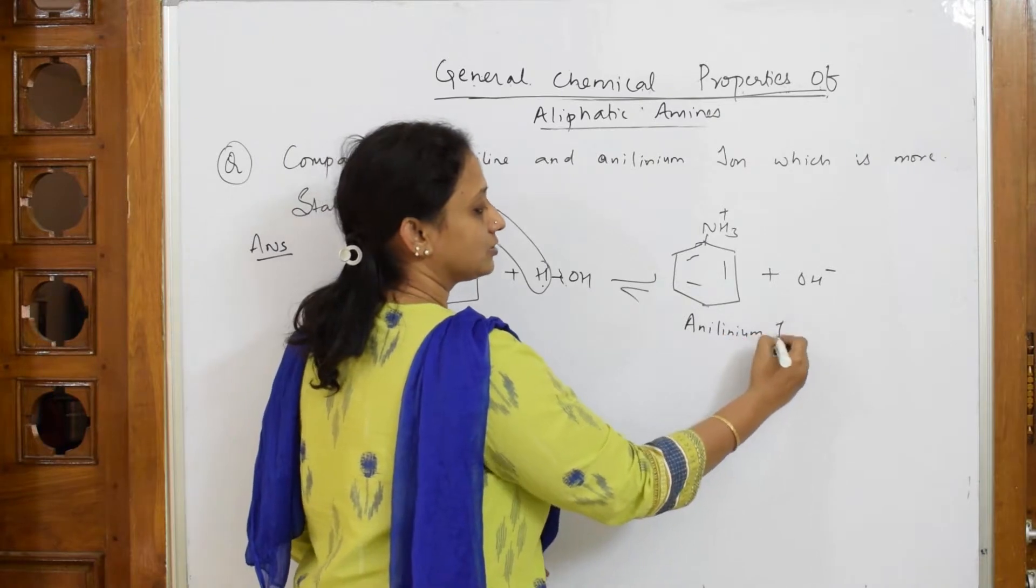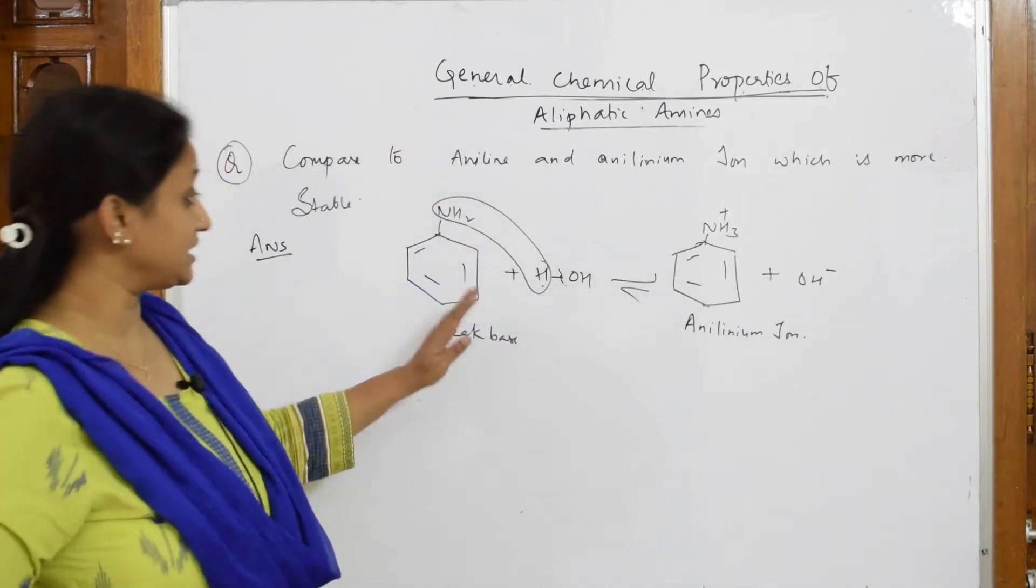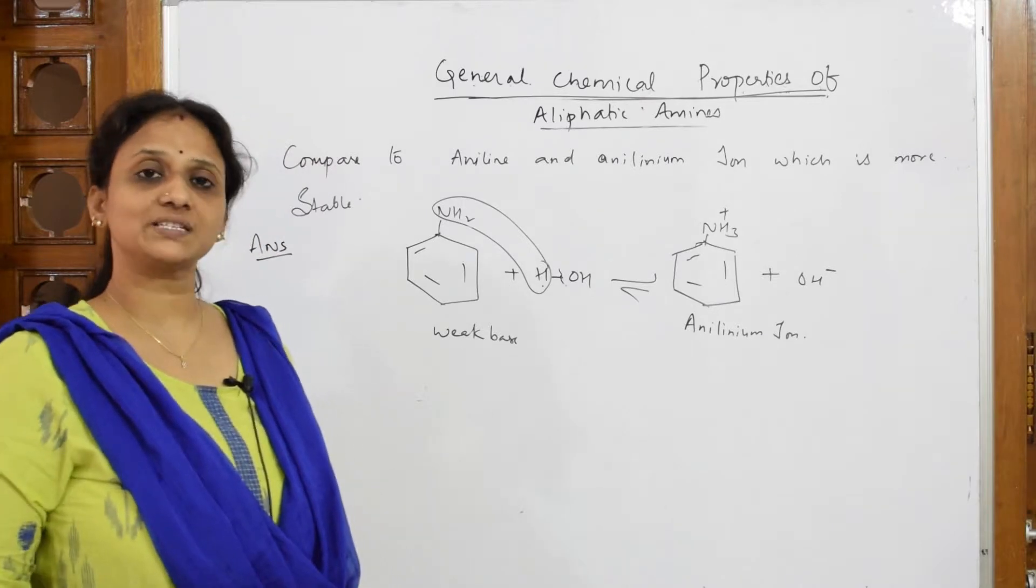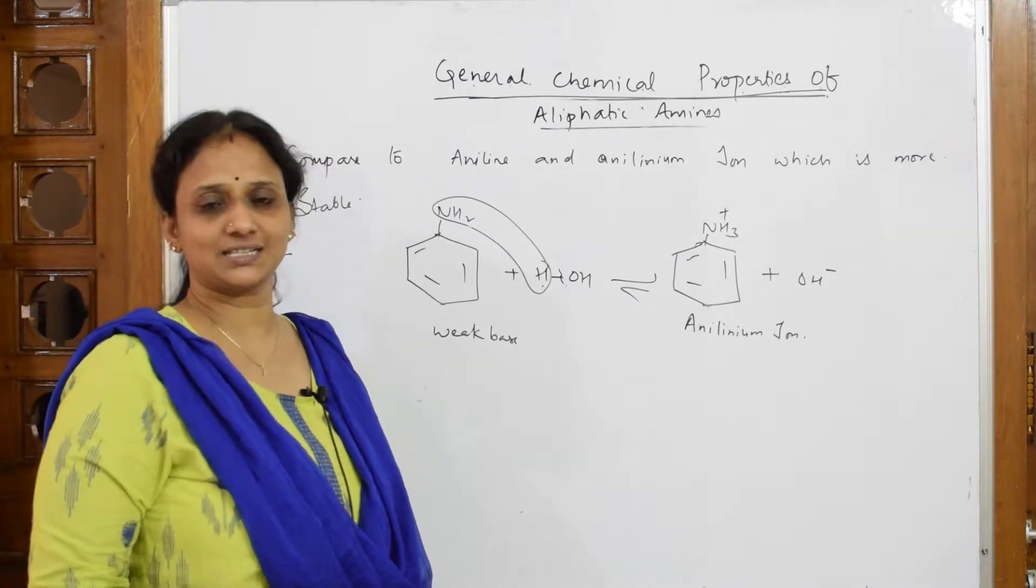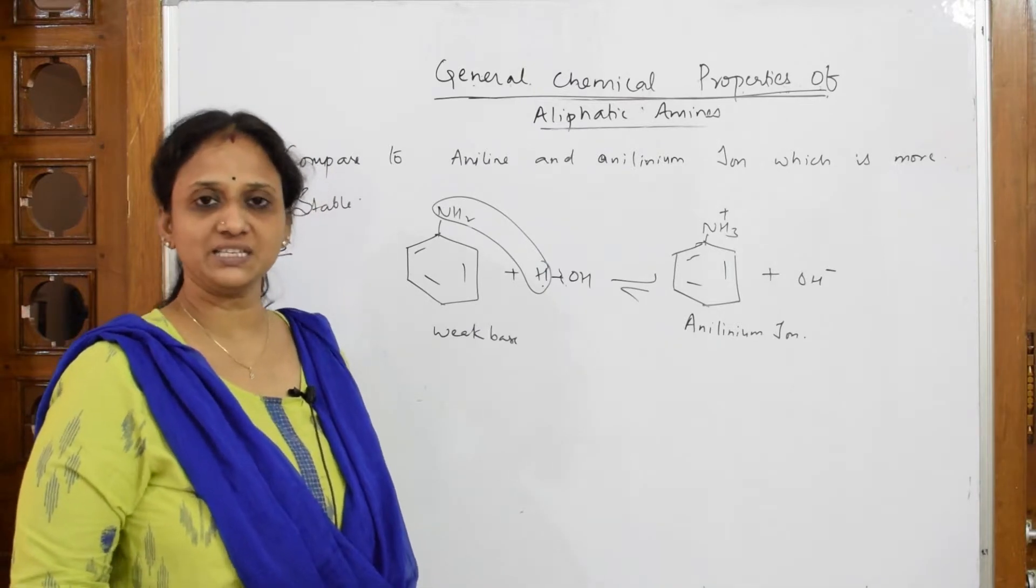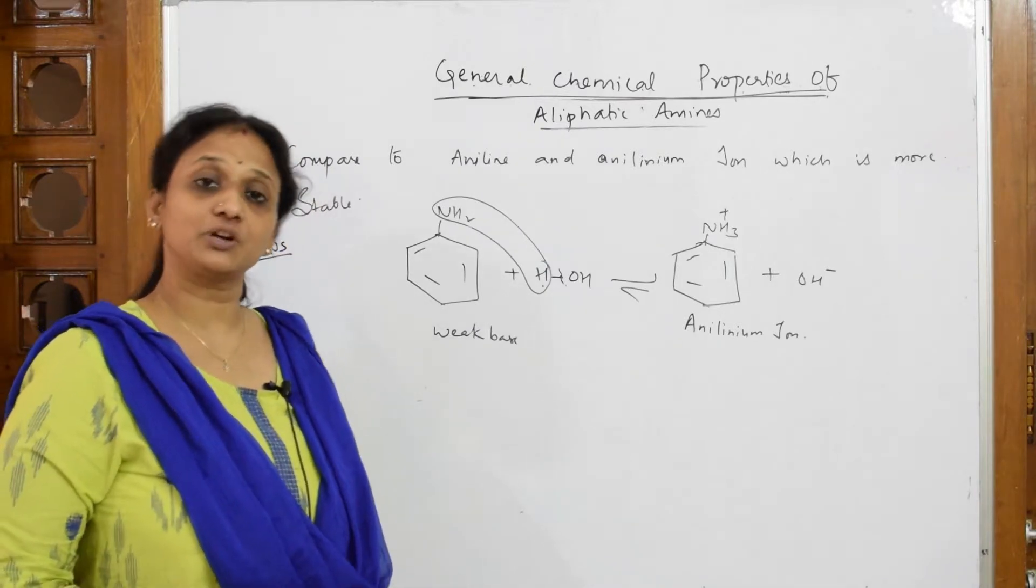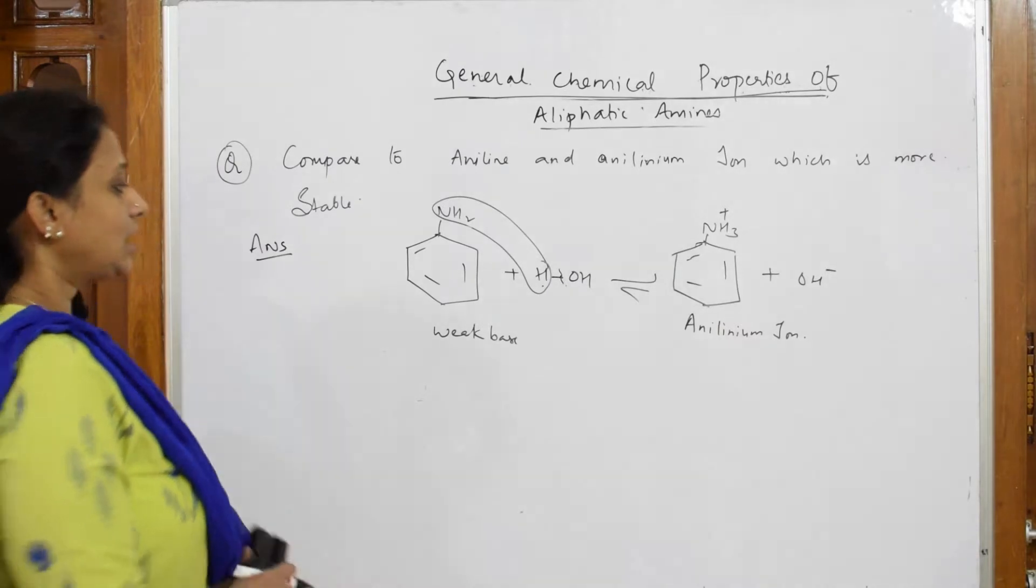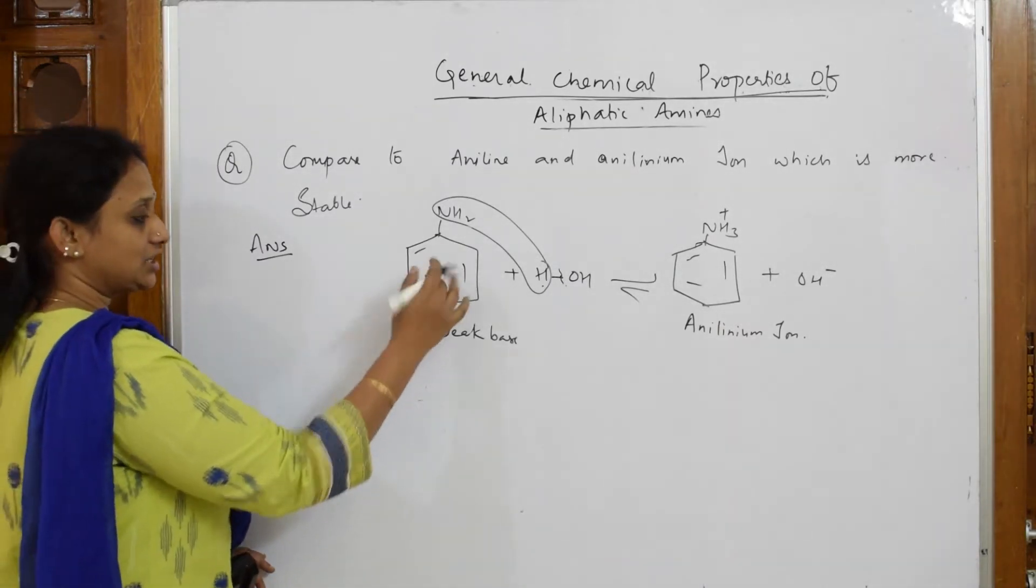Compared to aniline and anilinium ion, which is more stable? On what basis do I explain stability? Resonance. In the earlier video, I've shown you aromatic amines are less basic than aliphatic because of resonance. Aniline shows resonating structures.